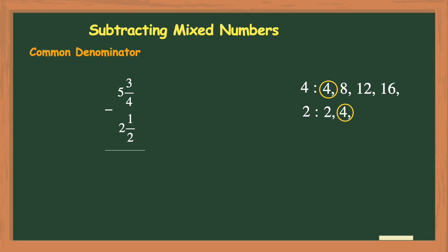My next step is to rename each fraction with my common denominator of 4. I'm not going to rename the top fraction of 5 and 3 fourths because the fraction for this mixed number already has a denominator of 4. So I'm just going to rewrite it.